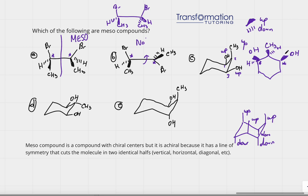Now that we've identified the chiral centers, is there a line of symmetry? Yes — there is a vertical line of symmetry through the center of the molecule where the two halves are identical. The CH3 group falls right on the line of symmetry, so whether it's wedge or dash doesn't matter. The two halves are identical, so this is a meso compound.